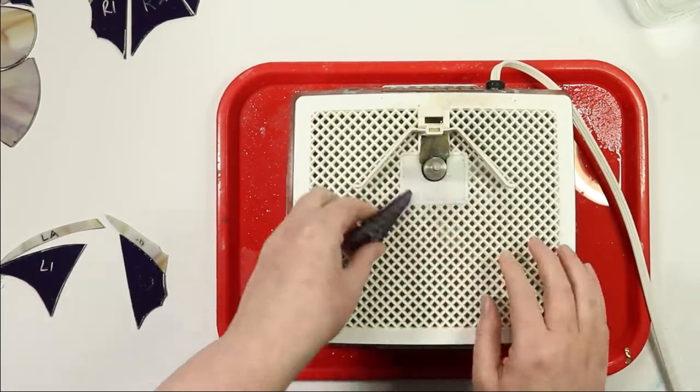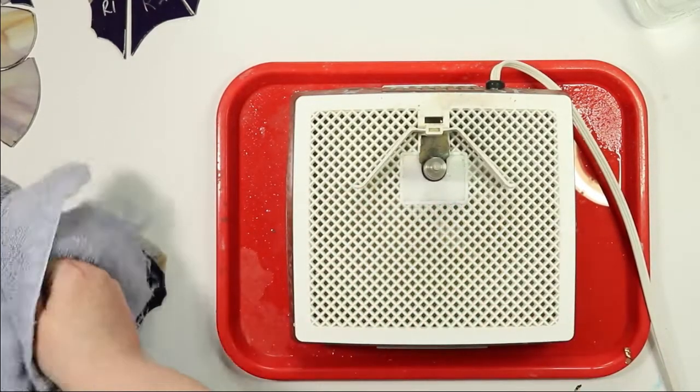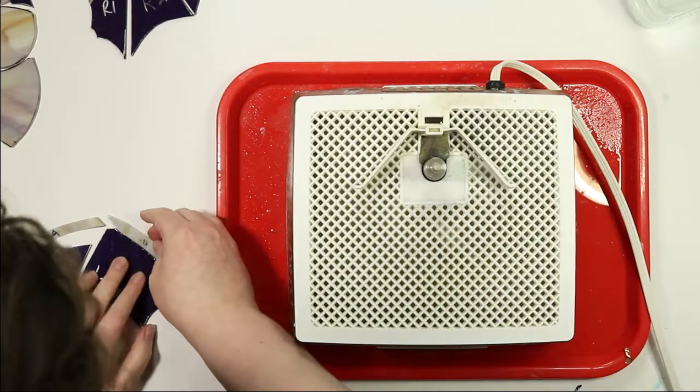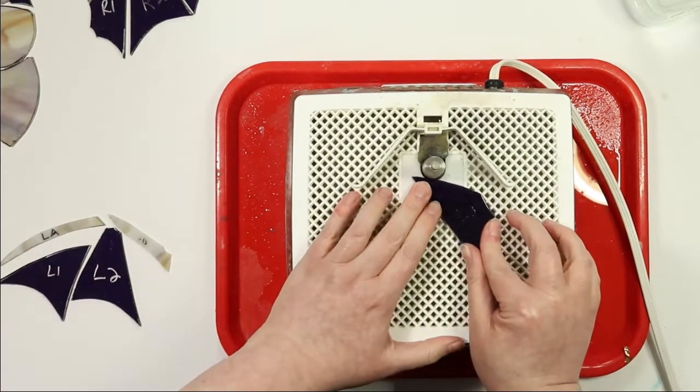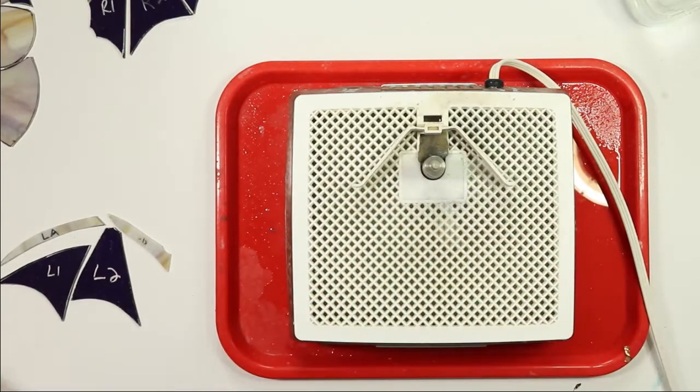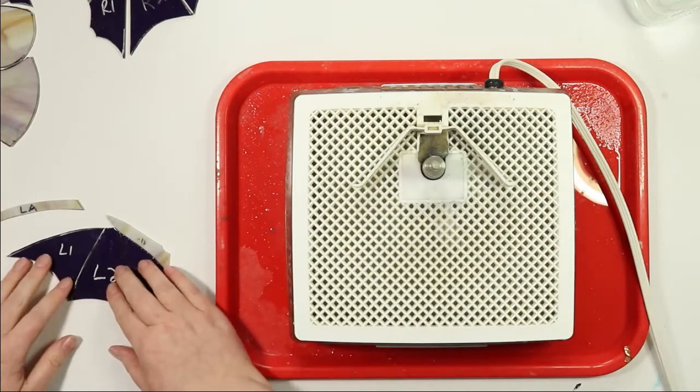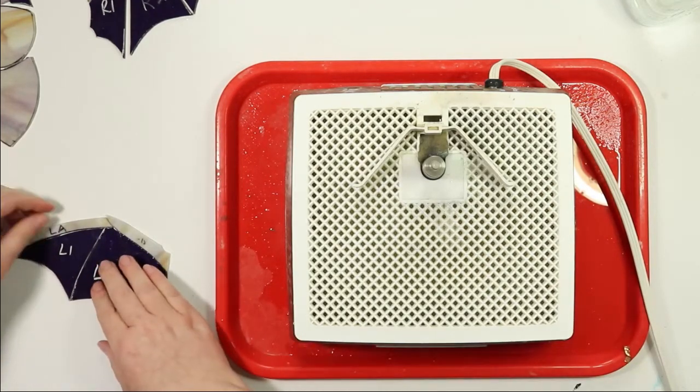But for this one, the reason I didn't use a pattern underneath as a guide is because when I was cutting the pieces out, they fit so closely that there wasn't really a lot of major adjusting that had to be done. It was just very minor tweaking that I had to do on the grinder.